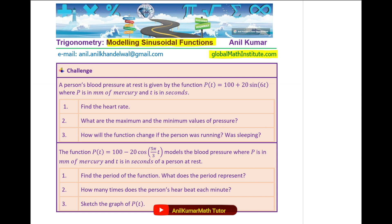The second question is based on the same concept, however this time we are considering the pulse rate as a cosine wave. The function p(t) = 100 − 20 cos(5π/3 · t) models the blood pressure, where p is in millimeters of mercury and t is in seconds for a person at rest. We need to find the period of the function, what the period represents, how many times the person's heart beats each minute, and we need to sketch the graph.